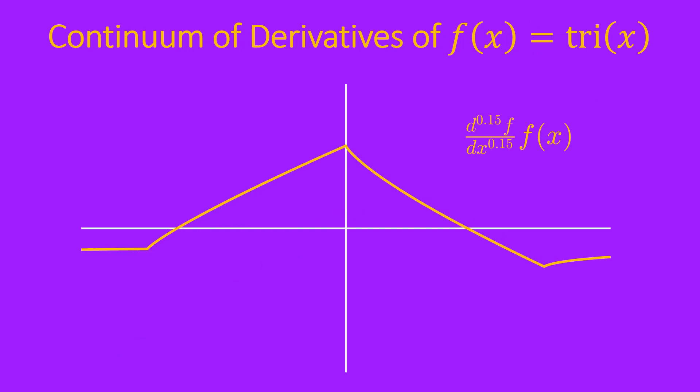What about a triangle function? Well, a triangle has two discrete slopes, so its first derivative kind of looks like a staircase, and we can watch that function morph from the original function into its first derivative, with all of the fractional derivatives in between.